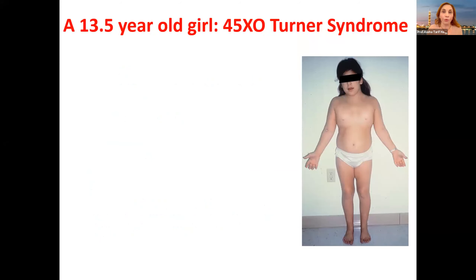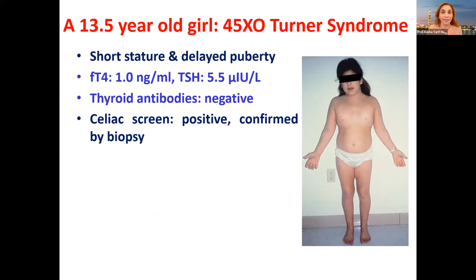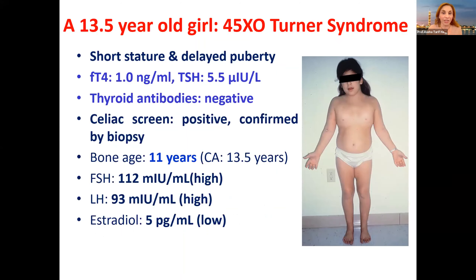Now let me show you this 13.5-year-old girl with 45X Turner syndrome presenting with short stature and delayed puberty. T4 is normal, TSH is in the high normal at 5.5, antibodies negative. She has celiac disease confirmed by biopsy; bone age is delayed; FSH and LH are very high; estradiol very low — hypergonadotropic hypogonadism associating ovarian dysgenesis. She was also found to have a partial horseshoe kidney.